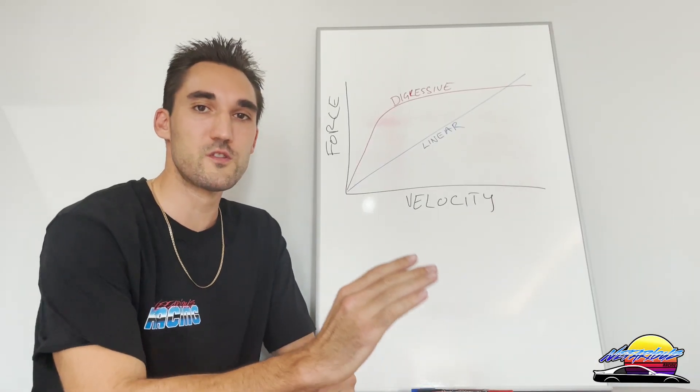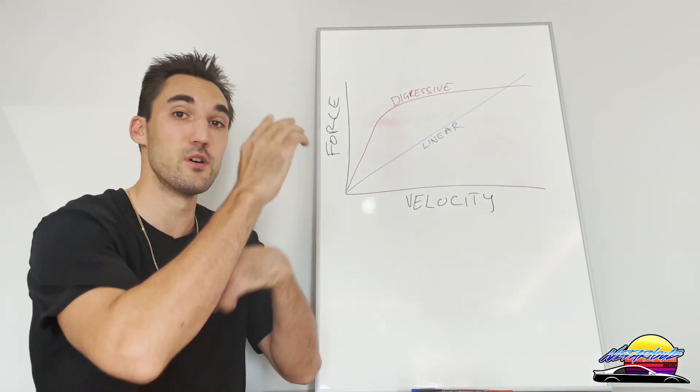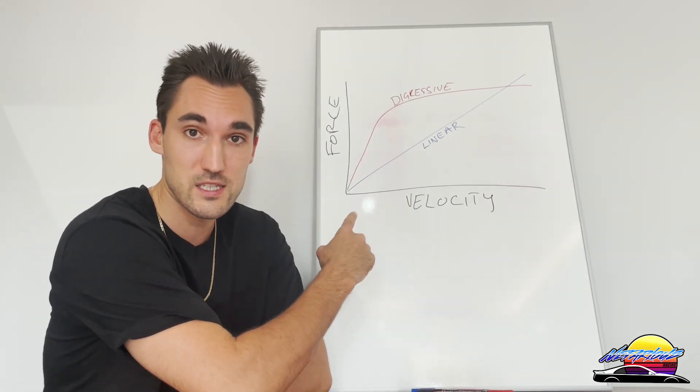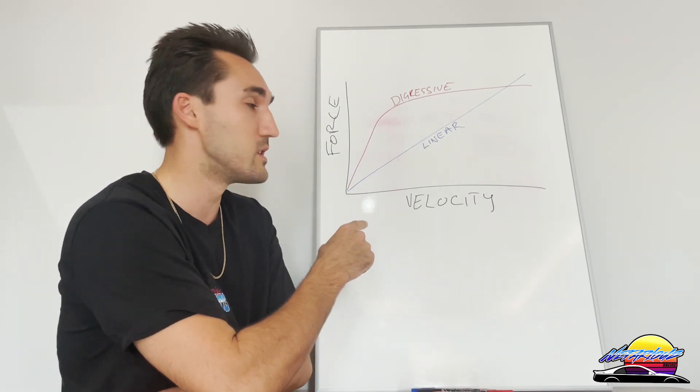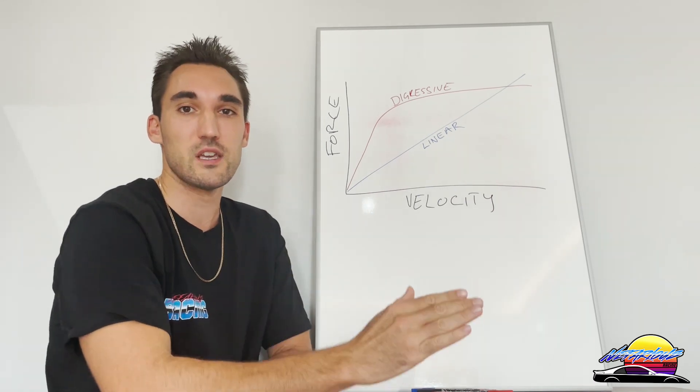Alright guys, if you're looking to buy coilovers for your car, you will come across two different types of damper valving: linear damping and digressive damping. In this video, I'm going to explain the difference between linear and digressive damping so you know what you're actually looking at and can get the right coilovers for your car.